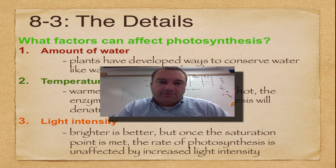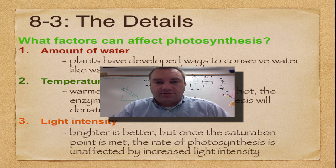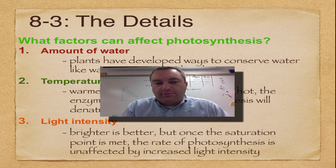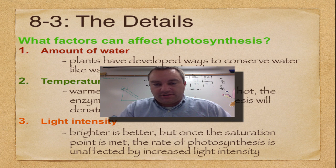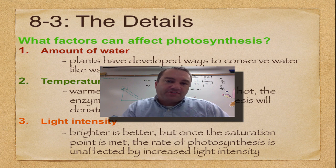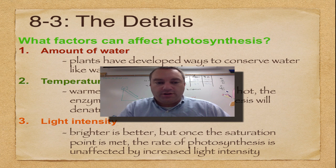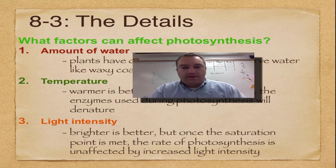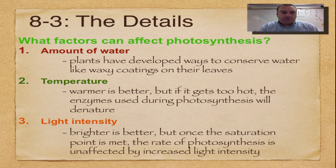Welcome to episode 7 from our chapter 8 series of screencasts on photosynthesis. In this final episode we're going to learn about three things that affect the rate of photosynthesis, because photosynthesis does not always occur the same amount in every situation. The three factors are what you see here on your screen.